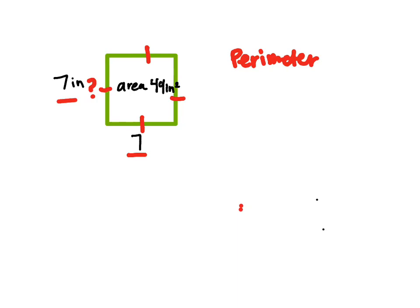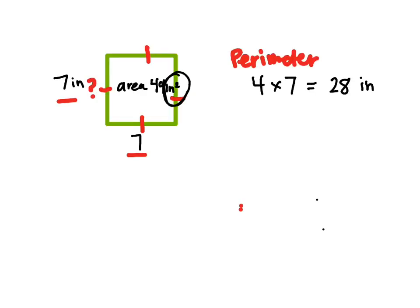And then to find the perimeter, I know I have 4 sides with a measure of 7 inches. So 4 times 7 is 28, so my perimeter would be 28 inches. So what you're going to want to remember as you're doing these problem types is that area is the measure inside of the rectangle or square. Perimeter is the measure around.